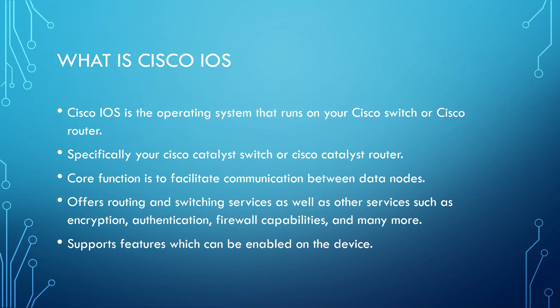So to begin with, what is Cisco IOS? Cisco IOS stands for Cisco Inter-Network Operating System. Essentially, it's just the operating system which runs on your Cisco router or switch — more specifically, your Catalyst switch or your Catalyst router. The core function of Cisco IOS is to perform the function of a router or switch: to facilitate communication between data nodes, either switch frames or route packets.